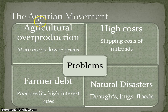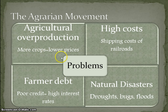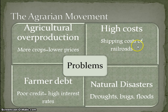A couple of the farmers' problems are agricultural overproduction — more crops at lower prices. They're also going to encounter higher costs because of the shipping costs of the railroads. Remember, they had that problem before the Interstate Commerce Act was created.